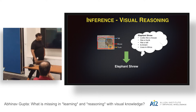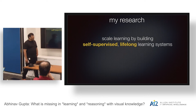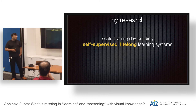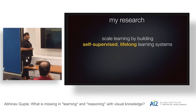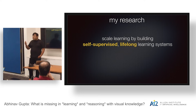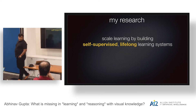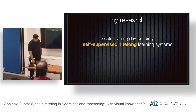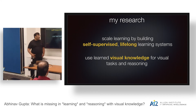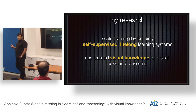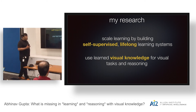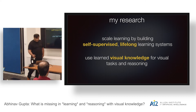My research focuses on tackling both these challenges. First, I want to scale up learning by building self-supervised lifelong learning systems — going from a million images to billions of images as my long-term goal. But more importantly, I also want to use whatever visual knowledge we have learned about how the world works for visual tasks and reasoning. Towards these goals, we have been doing a lot of work.